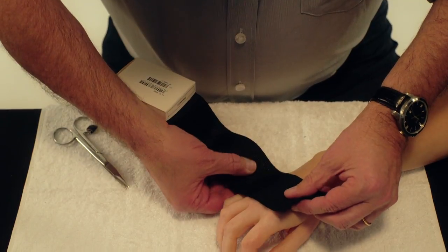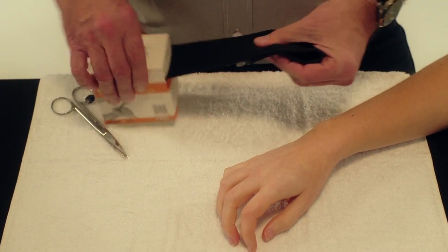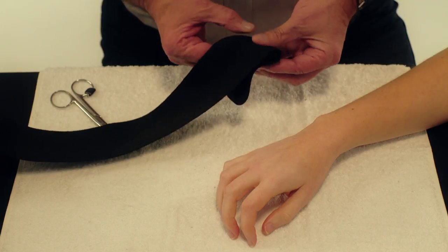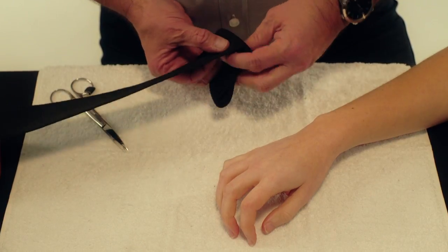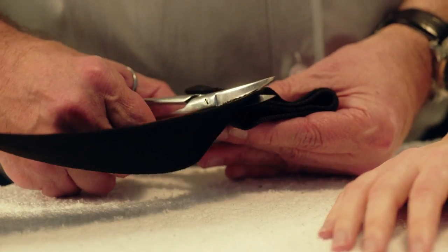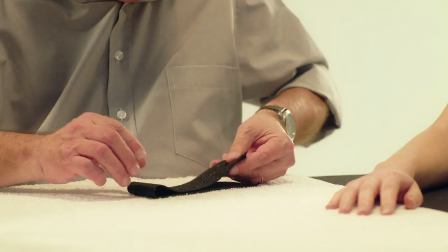Use a strip of OrphiCast which is 6 cm wide and 4 times the width of the hand. Fold the OrphiCast in half widthwise.